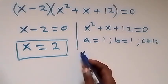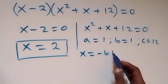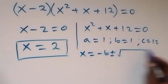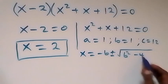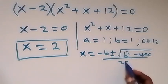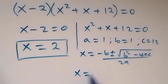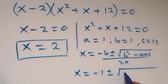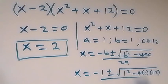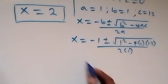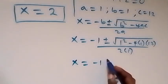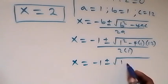Using the quadratic formula x equals minus b plus or minus square root of b squared minus 4ac over 2a, we get x equals minus 1 plus or minus square root of 1 squared minus 4 times 1 times 12, over 2 times 1.